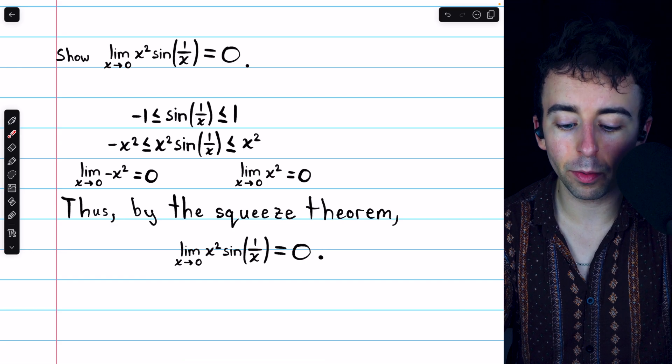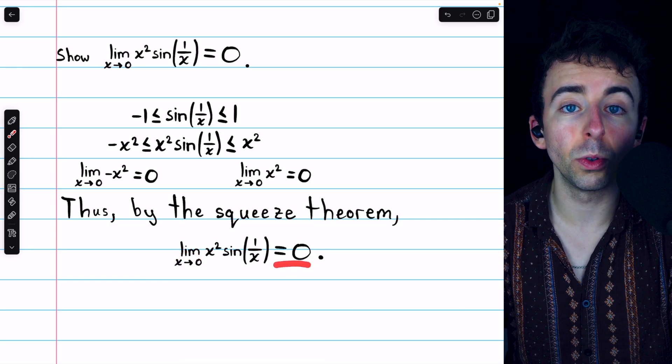The limit of x squared times sine of 1 over x, as x approaches 0, is equal to 0.